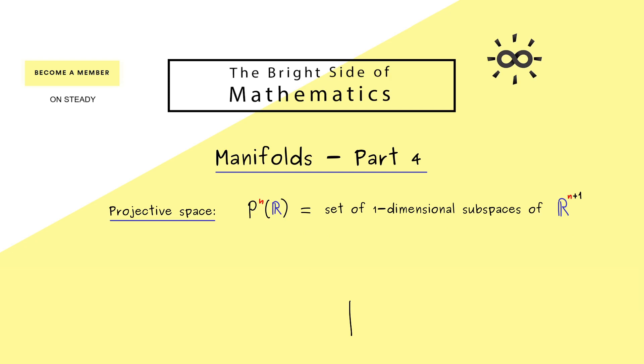So maybe we should visualize this in the case n is equal to 1. Hence we take R^2 and look at the one-dimensional subspaces in it. In other words, we have to look at all the lines that go through the origin.